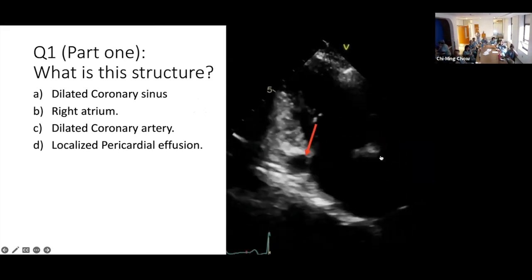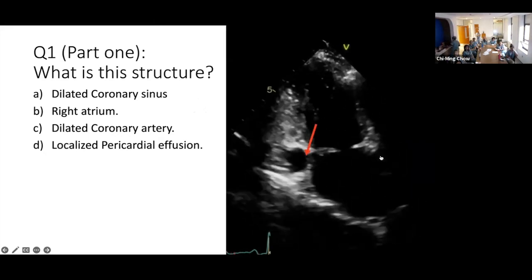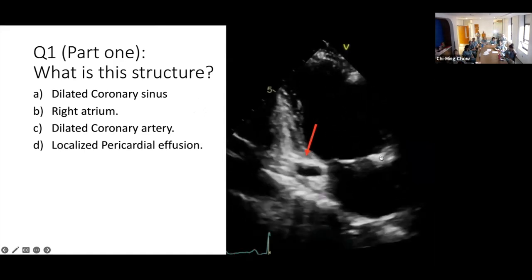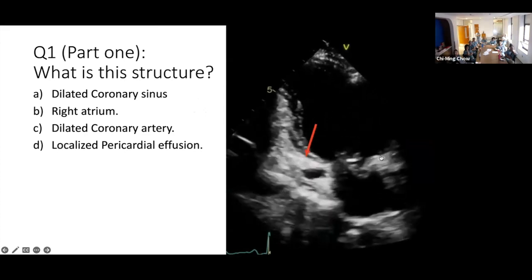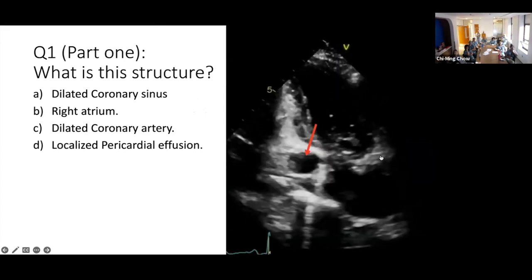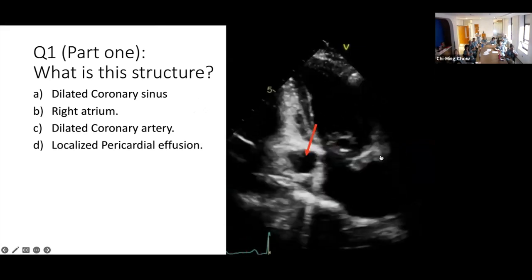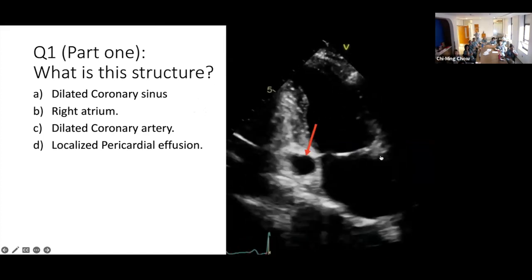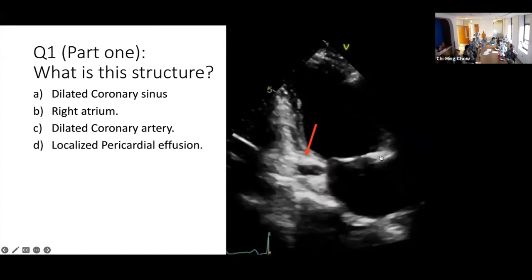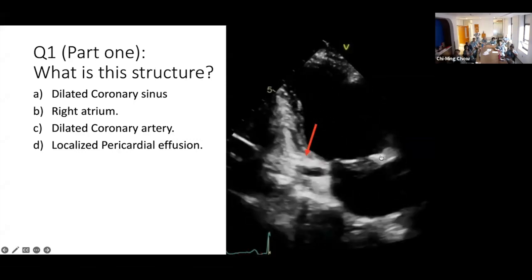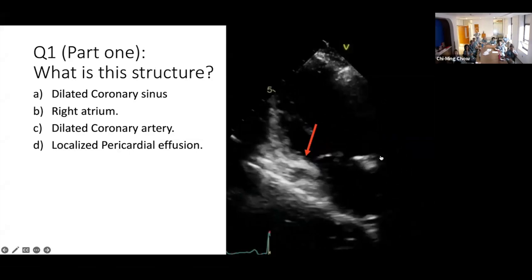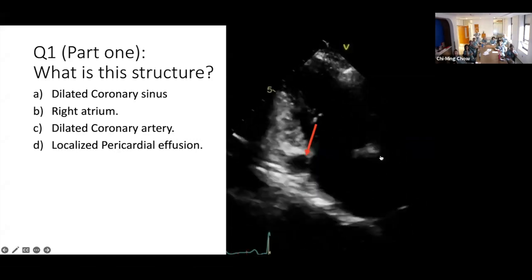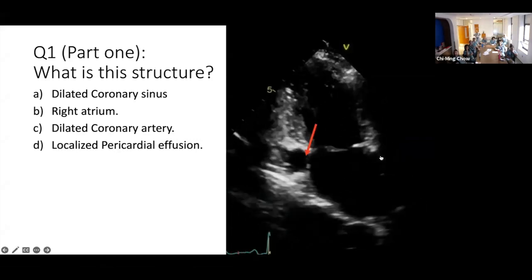So what do you think this structure is? For each question I will give about 20 to 25 seconds. So what is this structure? Is it a dilated coronary sinus? Is it right atrium? Is it a dilated coronary artery? Is it localized pericardial effusion? Okay, time is done.